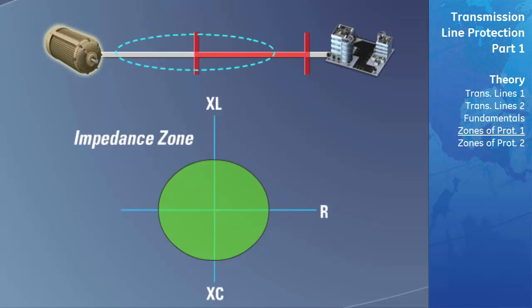First, we will discuss the zone of protection known as an impedance zone. Any impedance that falls within the radius of the circle indicates a fault that needs to be cleared. The reach indicates in ohms how far down the power system the zone of protection extends. This type of zone is inherently non-directional and will detect faults that occur in the reverse direction away from the point of measurement. This type of zone is normally used for generator backup protection.